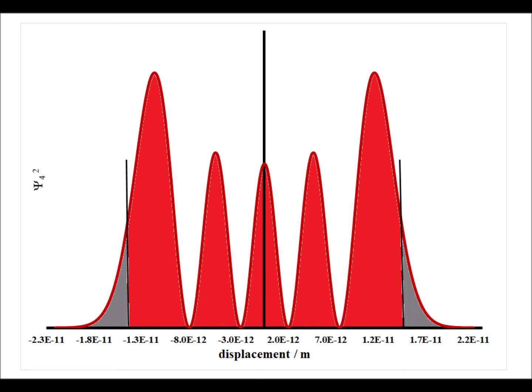And notice as n gets larger, the shape of the filled in red regions more and more closely approximates a parabola, which would be the situation for a classical oscillator. So here we see the correspondence theorem, how as the quantum number gets very, very large, the properties start to approach those of classical mechanics.